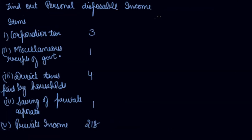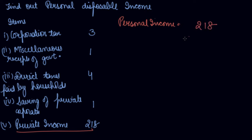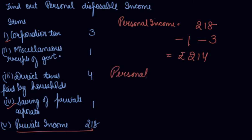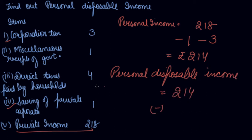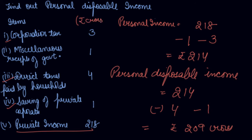In this question you are asked to find personal disposable income. You are given private income, so you first find personal income: private income minus undistributed profit (savings of private corporates) minus corporation taxes — that is 3. So 214 is your private income and 214 gives you your personal income. Then from personal income, personal disposable income is calculated by subtracting direct taxes paid by households and miscellaneous receipts of government — that is 1. The answer is 209 crores.